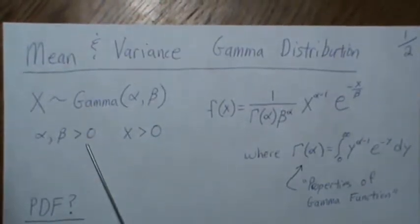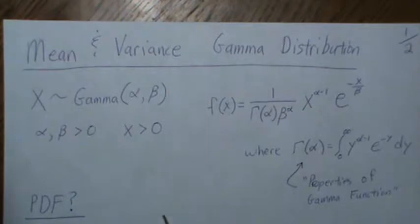Here the alpha and beta are always positive and our domain is X greater than zero.